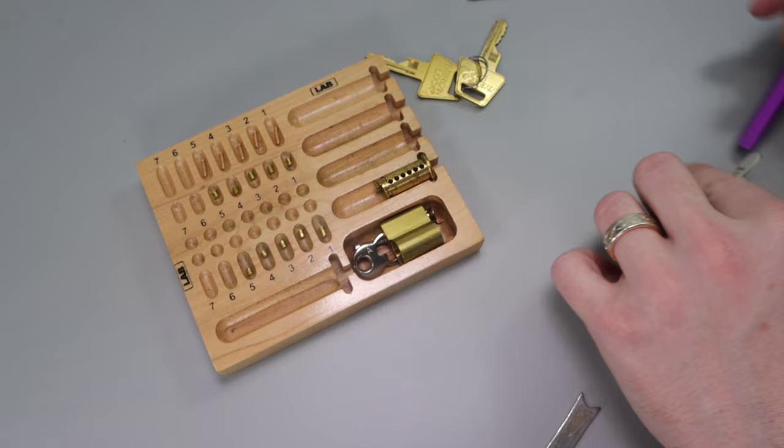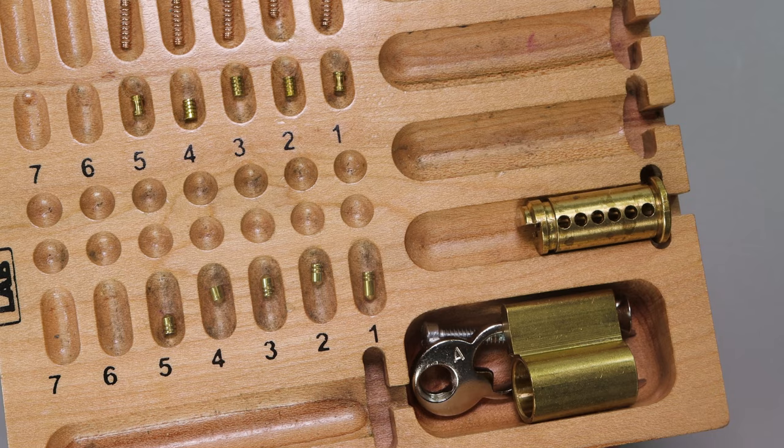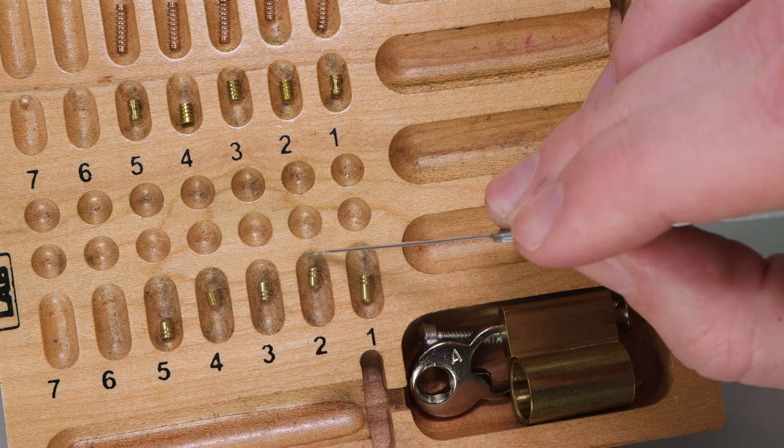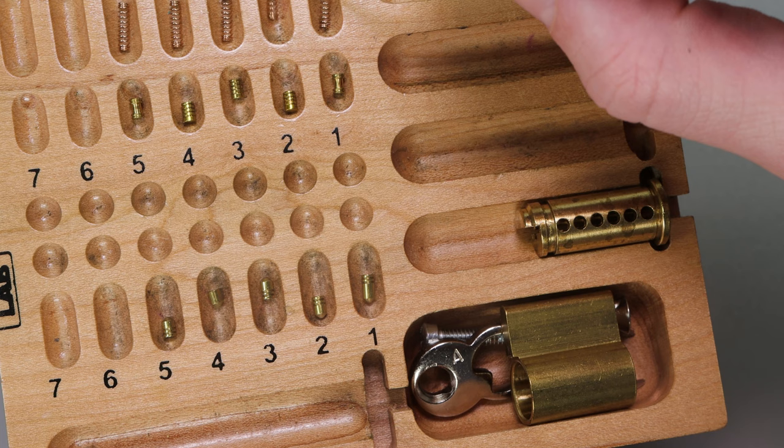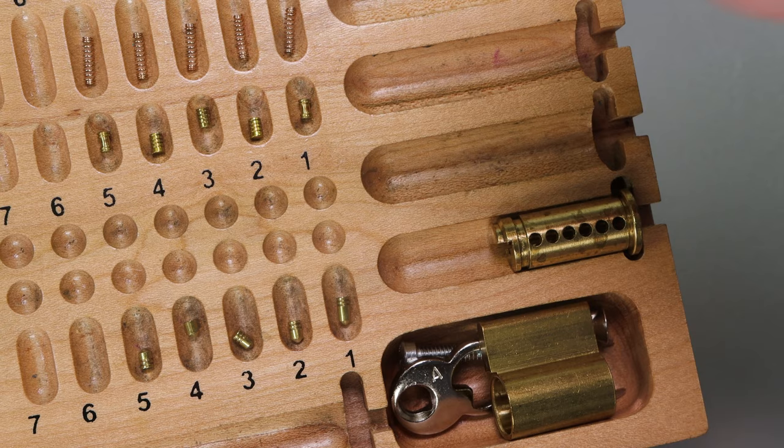So let's get a close up so we can all look together here. We have position 1 key pin, serrated key pin over serrated spool, copper spring. Position 2, a slightly shorter serrated key pin over a serrated pin over a copper spring. And then we're going to have a serrated key pin that's short as well over a serrated driver pin over a copper spring.